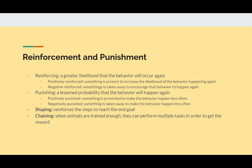Skinner uses negative and positive reinforcement and punishment to train the rats inside the Skinner box, but sometimes we can't wait forever for the rats to learn. So in order to speed up the process, we can use shaping. Shaping reinforces the steps to reach the end goal. For example, the rat could be reinforced for touching the lever with any part of its body, giving a greater chance of the rat stumbling upon the target behavior. There is also something called chaining, where animals trained enough can perform multiple tasks in order to get a reward, like going through an obstacle course to get the final reward.